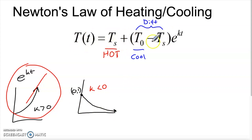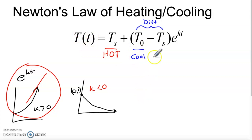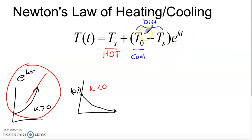As the e^(kt) term goes to zero, it gradually eliminates the difference term. The equation is saying: take the surrounding temperature and add this difference — positive or negative. If something cold is placed in a hot room, the difference is negative to start, so initially a whole lot of negative is added to the surrounding temperature, bringing it down to the object's temperature. But as e^(kt) crunches toward zero, less and less of this difference is added, and eventually the entire term vanishes — leaving just the surrounding temperature.